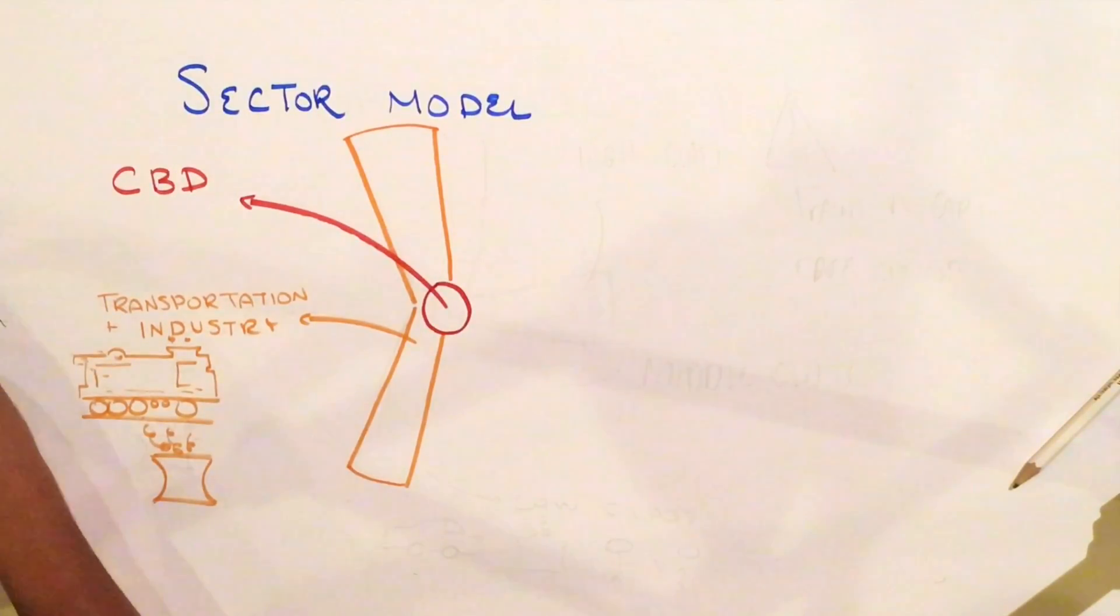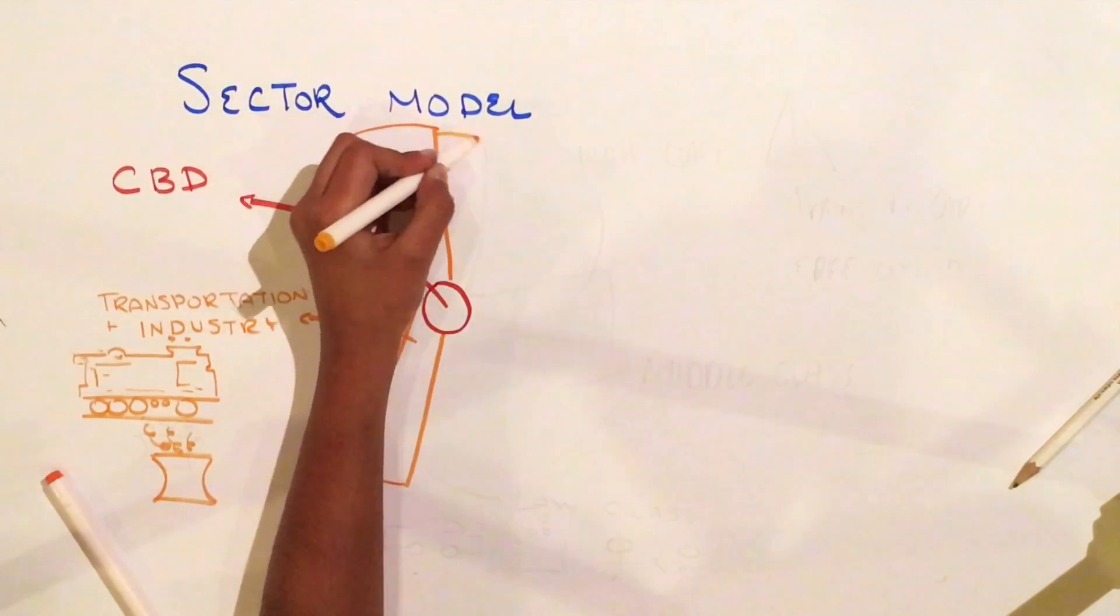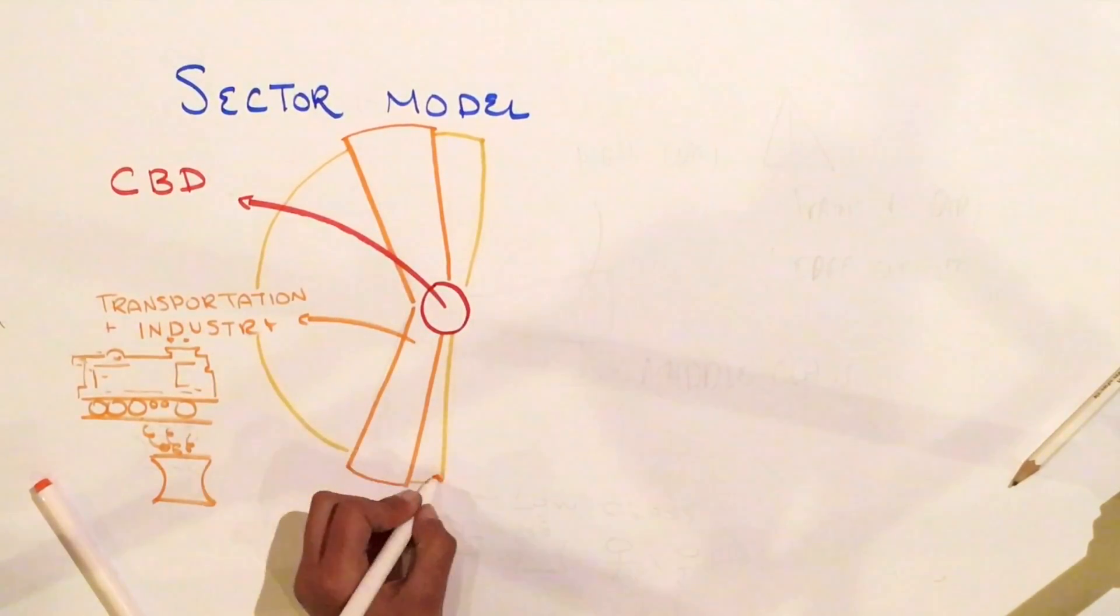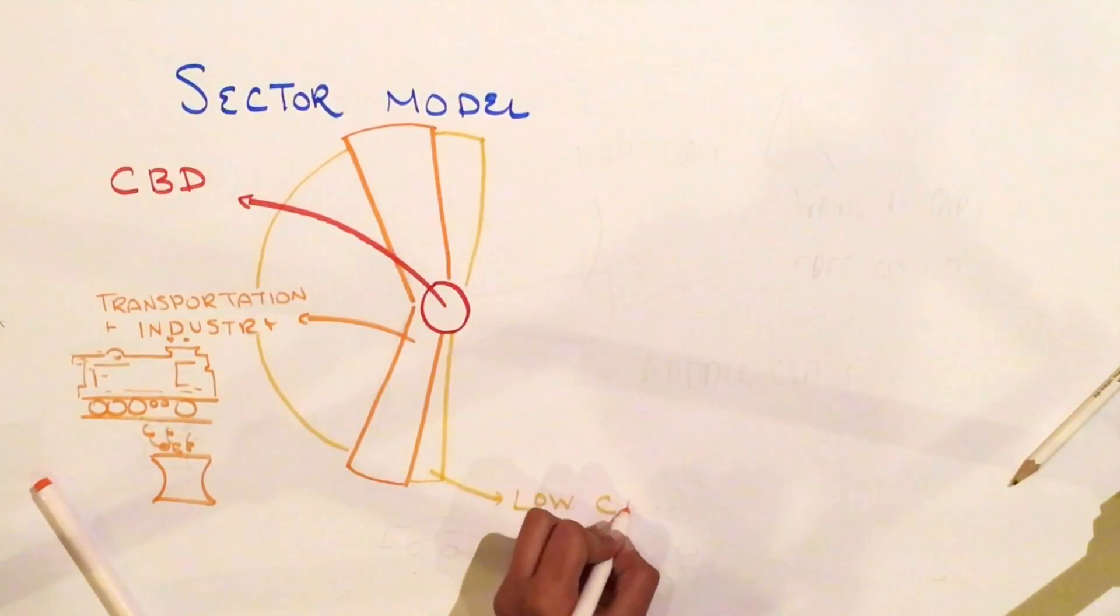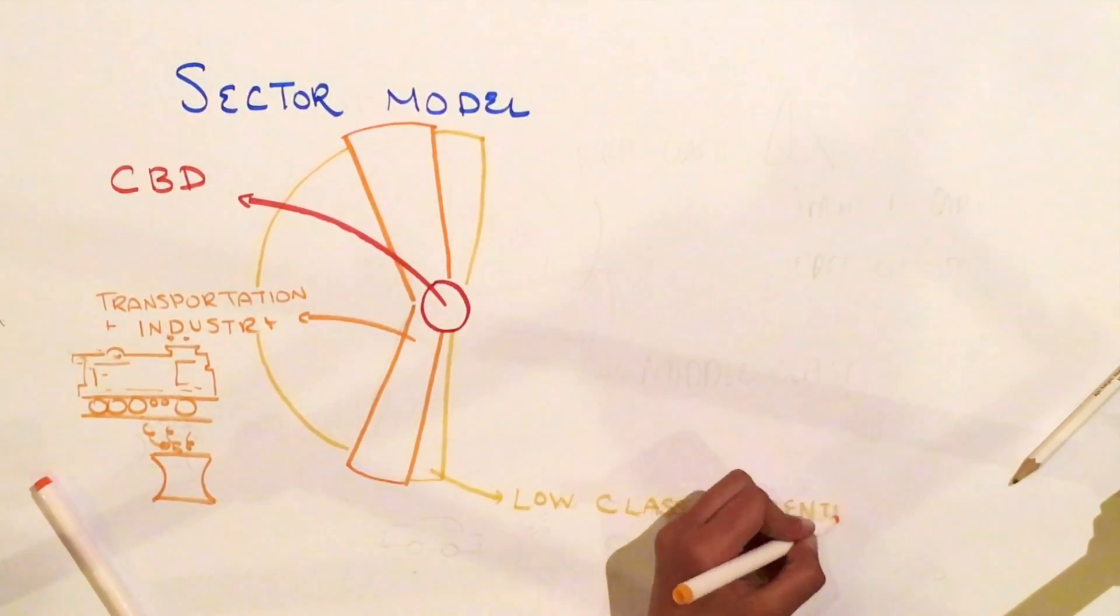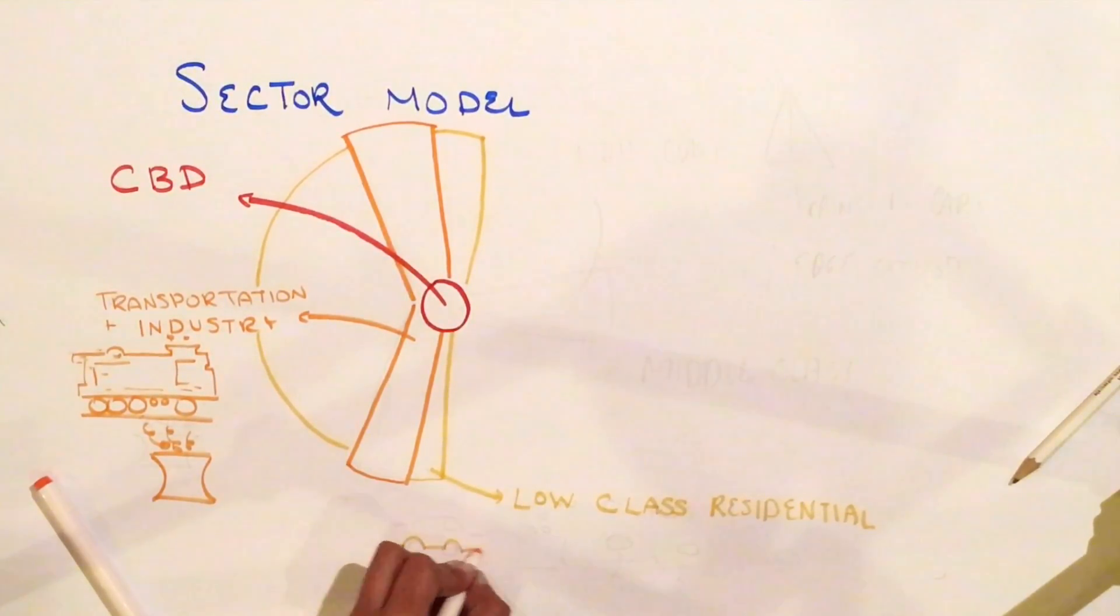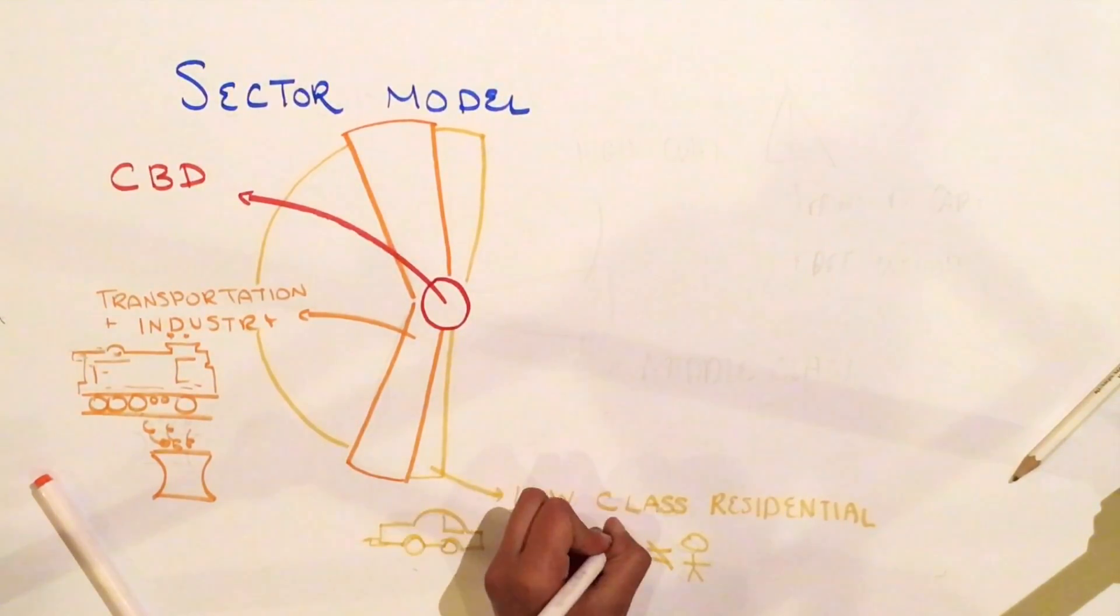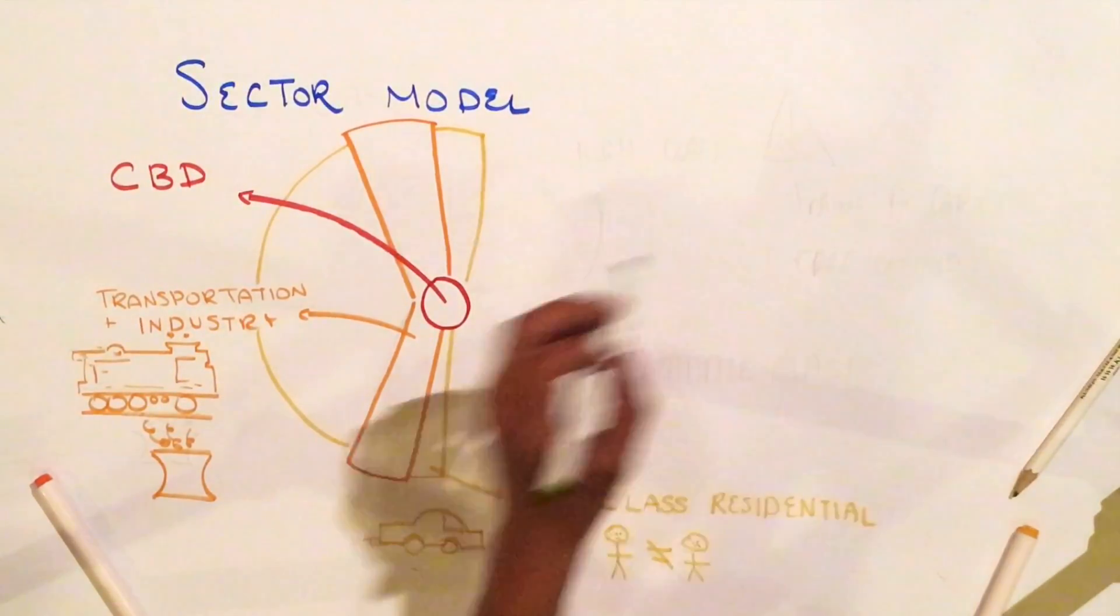Adjacent to the transportation sector is the low-class residential sector. This is because many of those who live in the low-class residential sector hold jobs in the transportation and industry sector. This sector grows outward in thin sections from the CBD. It also holds the worst living conditions of the whole entire city, having congested traffic, high amounts of pollution, and lots of discrimination.